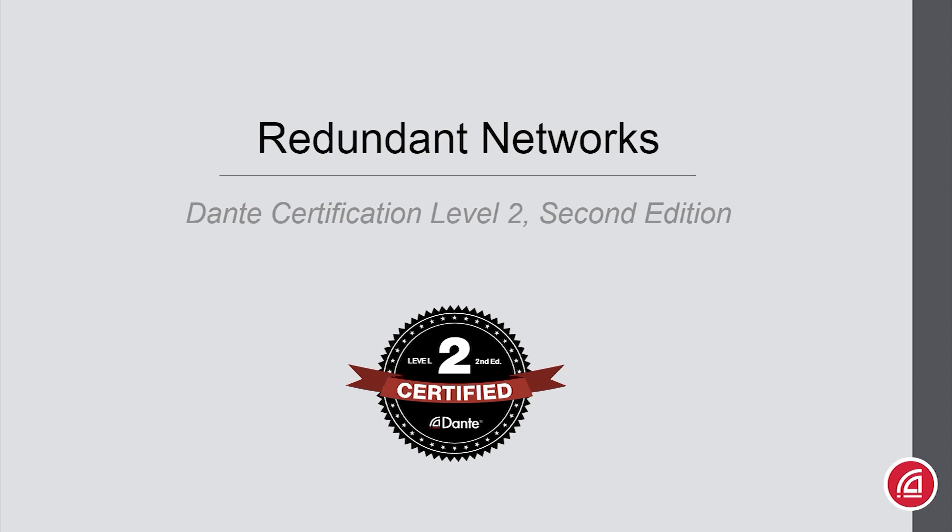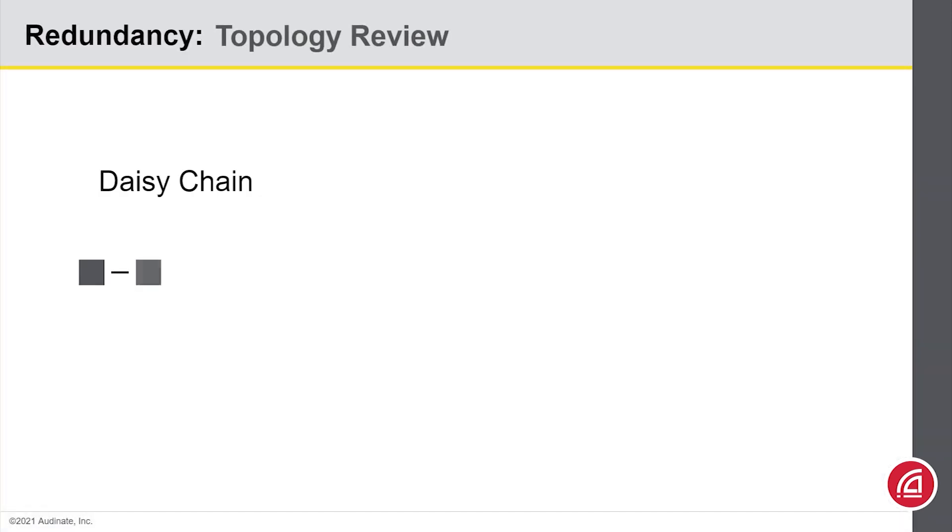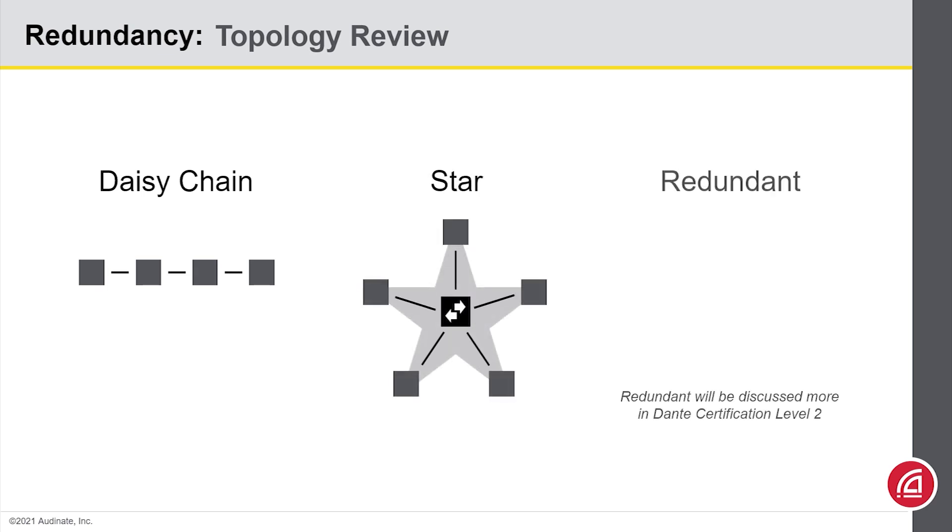Dante Certification Level 2, Second Edition. Redundant Networks. You'll remember that in the Level 1 class, we talked about different network topologies. We certainly talked about daisy chain and we showed a star network, but we didn't really get into redundant networks at that time. We saved it for this class.